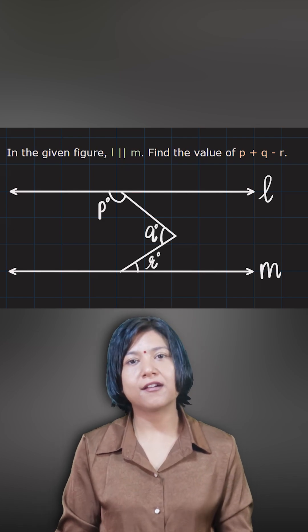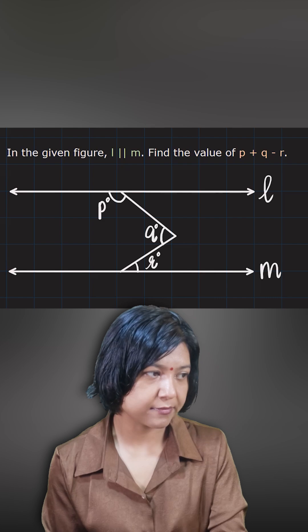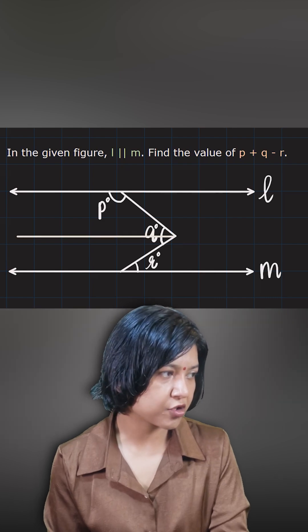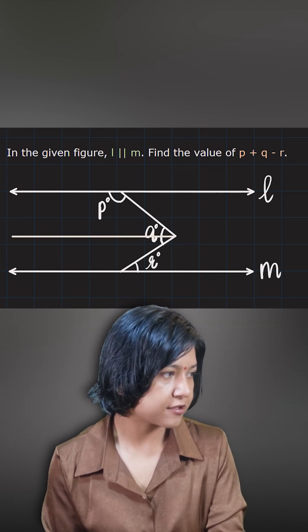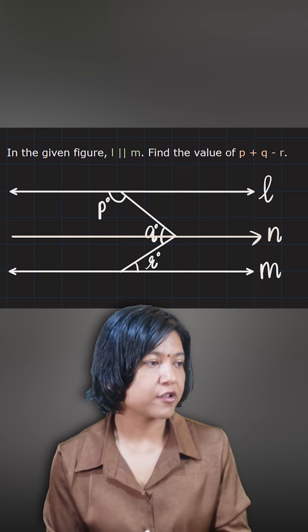The lines are parallel. Between two parallel lines, you can always bring a third line which is parallel to both of them. So I see a vertex here, so I want to bring a third line that will be parallel to the given two lines. So let's call this n.